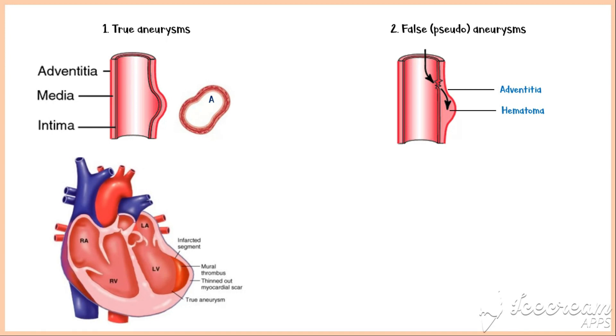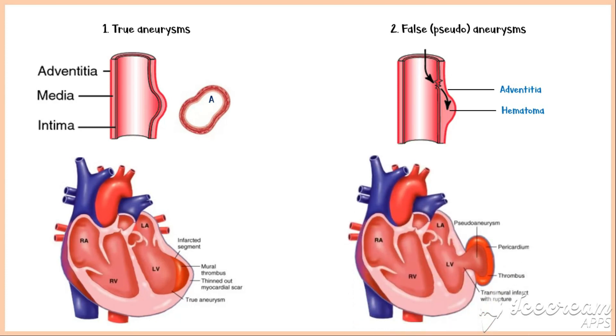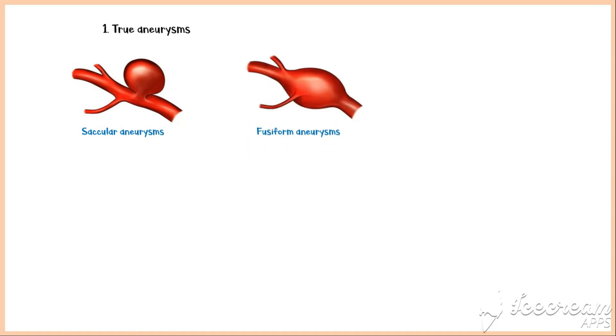Instead, it is covered only by the adventitia of the artery. Similarly, hematomas resulting from ventricular rupture are covered by the pericardium, creating a false aneurysm. True aneurysms occurring in arteries can be further divided into two types. Saccular aneurysms bulge out only on one side of the artery and are commonly seen in the brain. The other type is fusiform aneurysms, which bulge out from the artery circumferentially, just like a balloon. Overall, fusiform aneurysms are the commonest type.